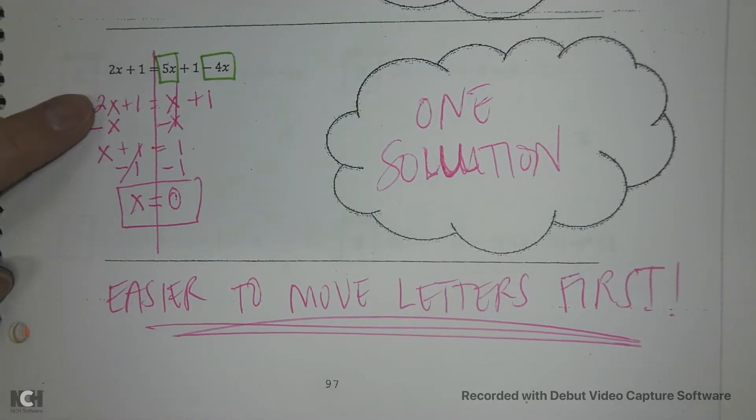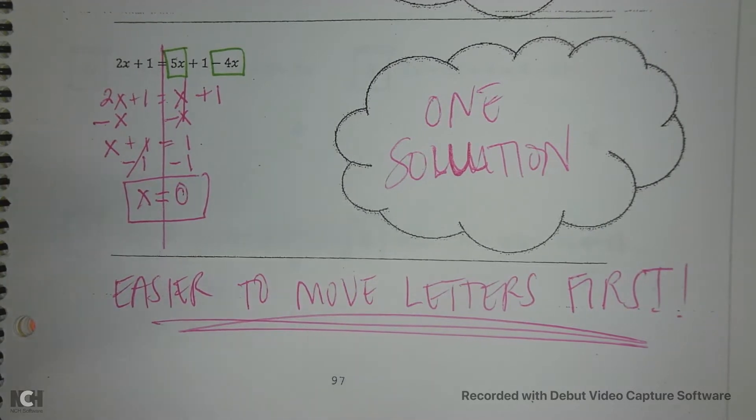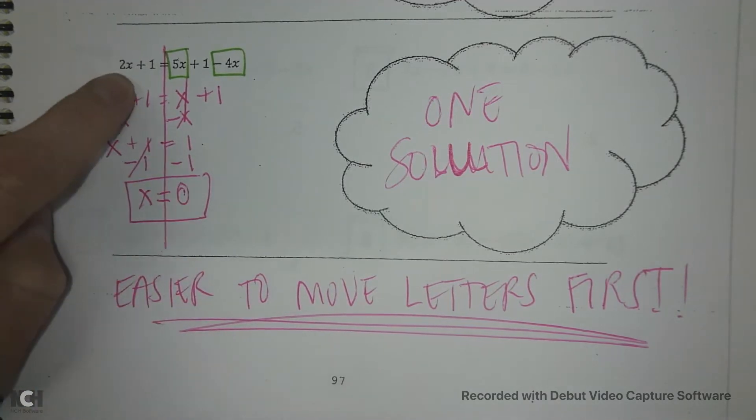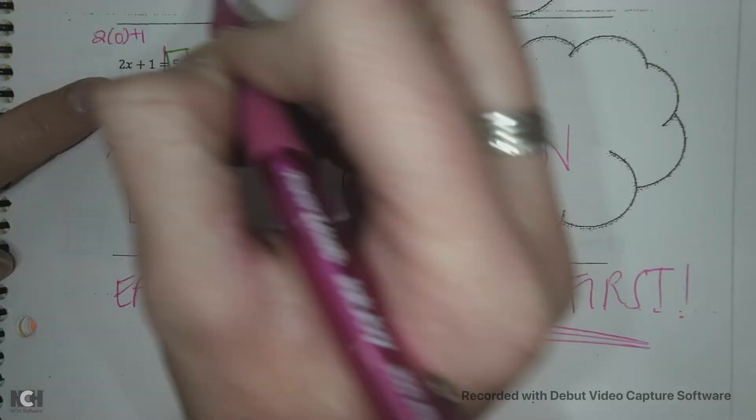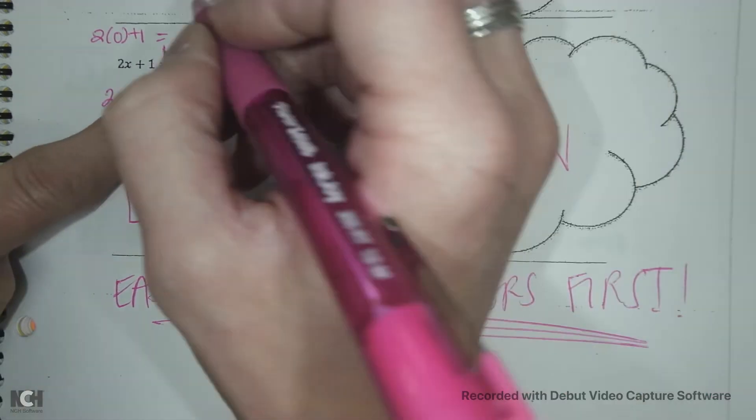This is what we're used to doing and these are the problems that we've been solving. What that means is if I take this number and only this number and I plug it in here.